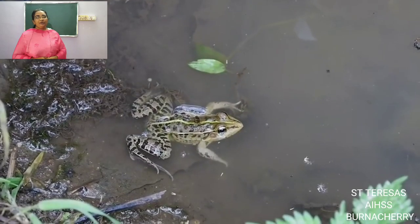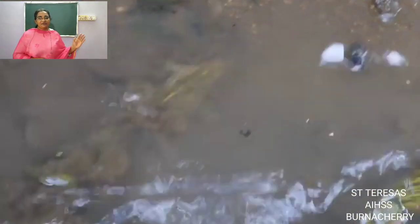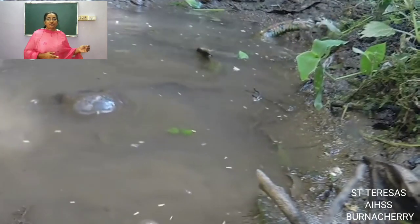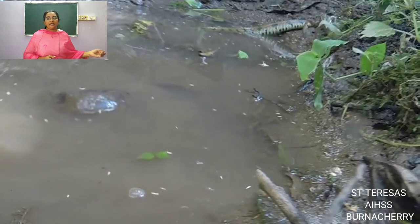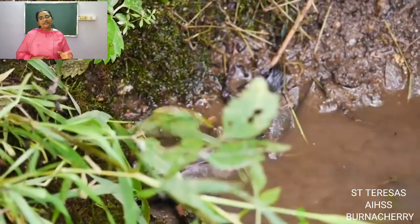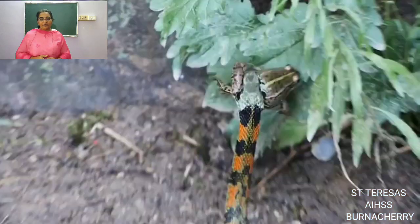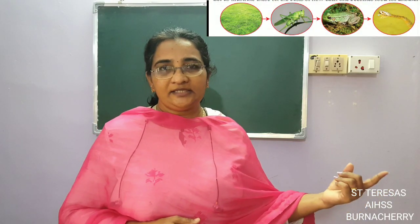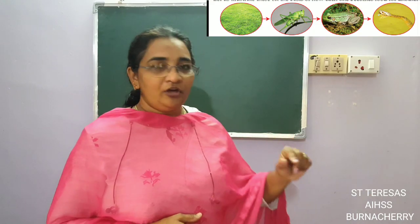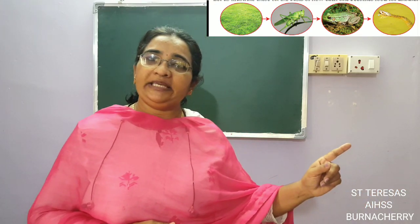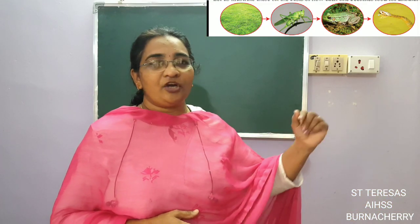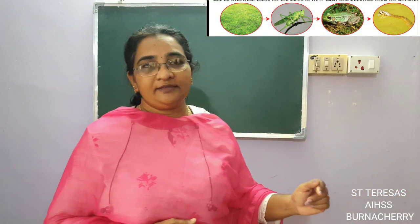The snake depends on — eats — the frog. What does the frog feed on? The frog feeds on the grasshopper. What does the grasshopper eat? The grasshopper depends on plants. So each organism is depending on another organism for its food.